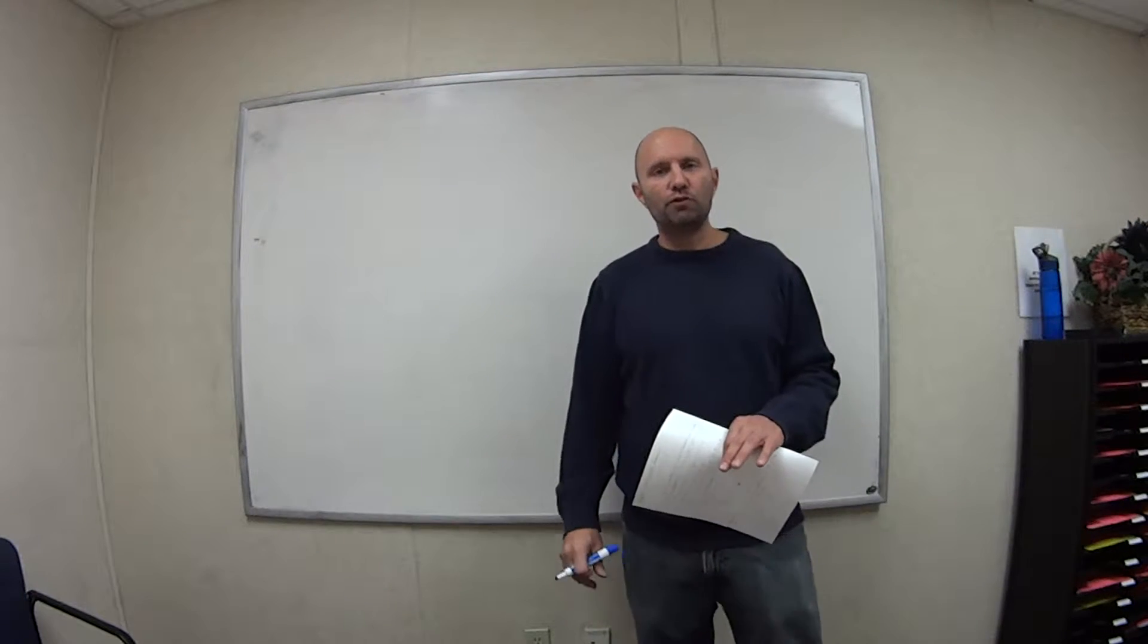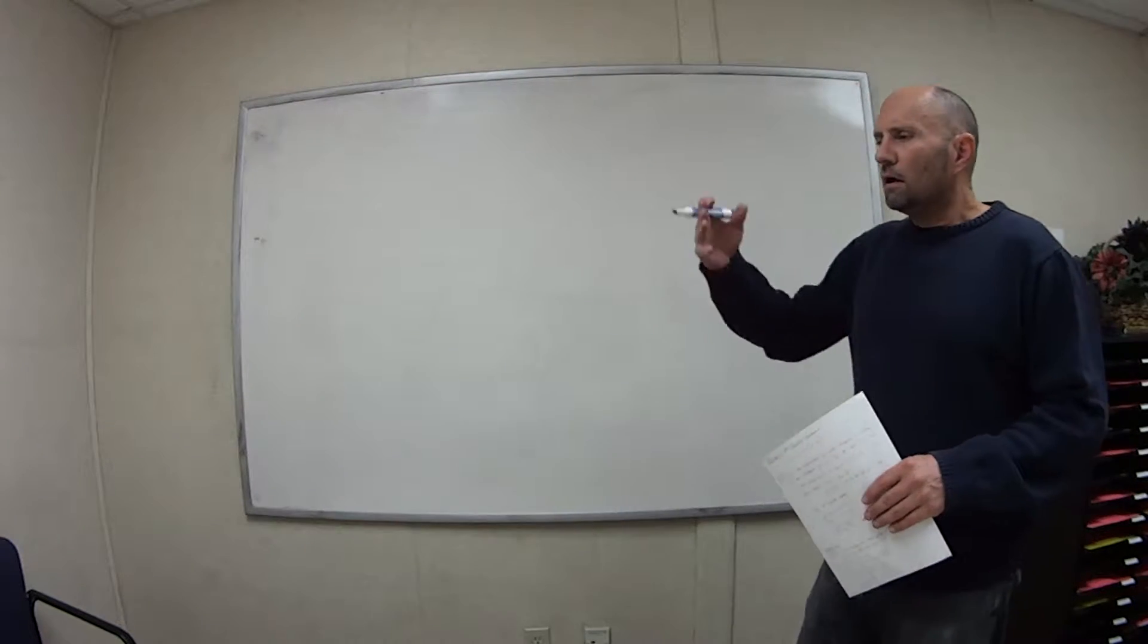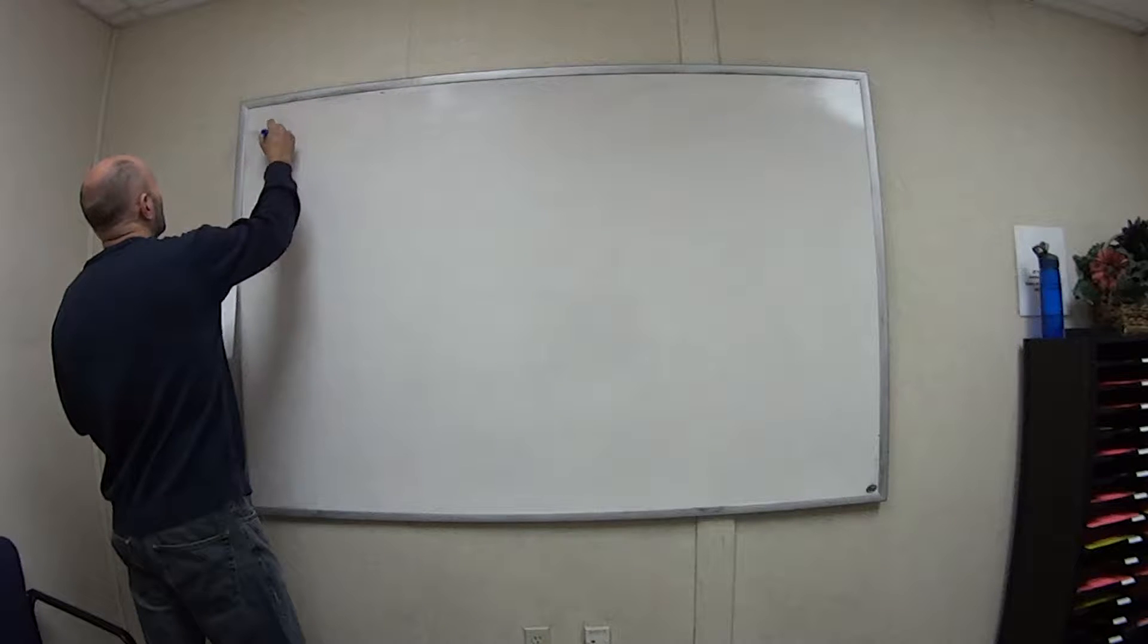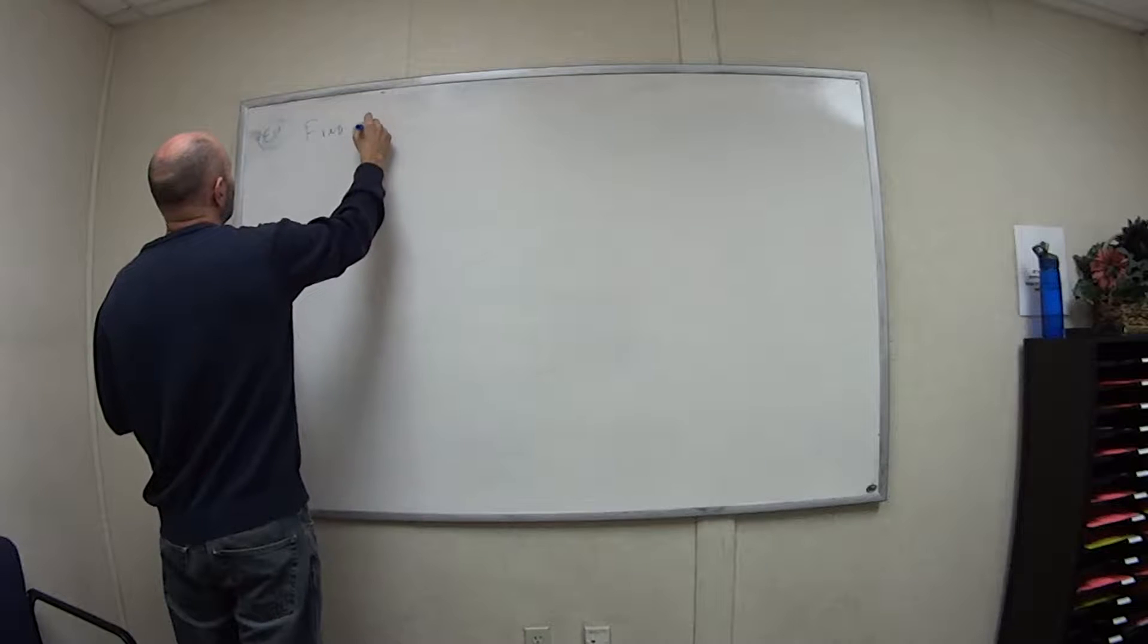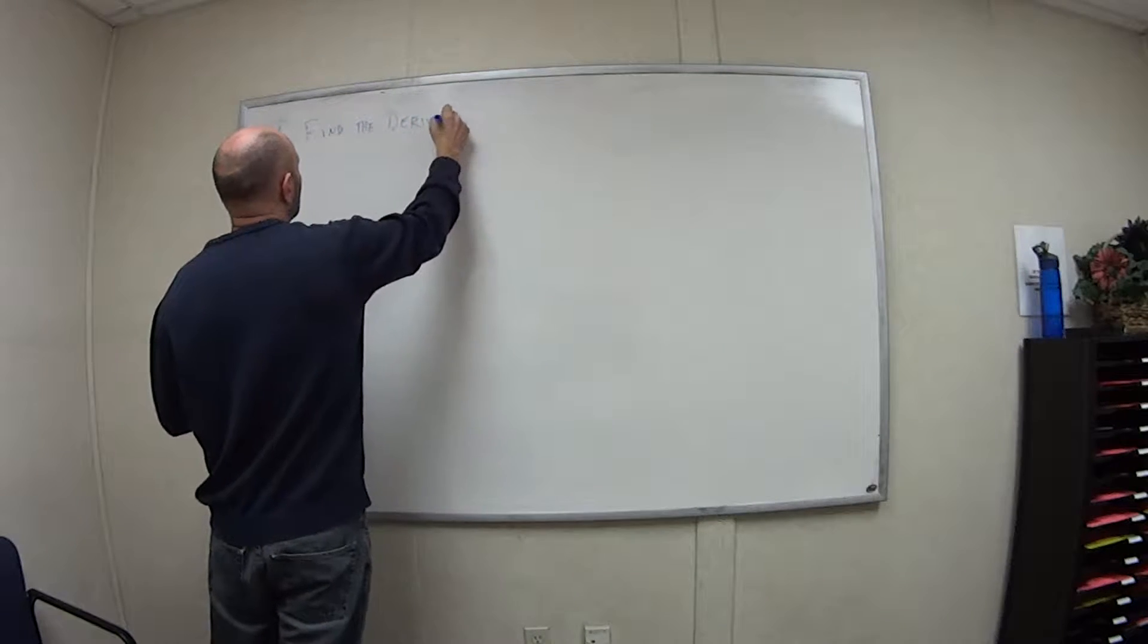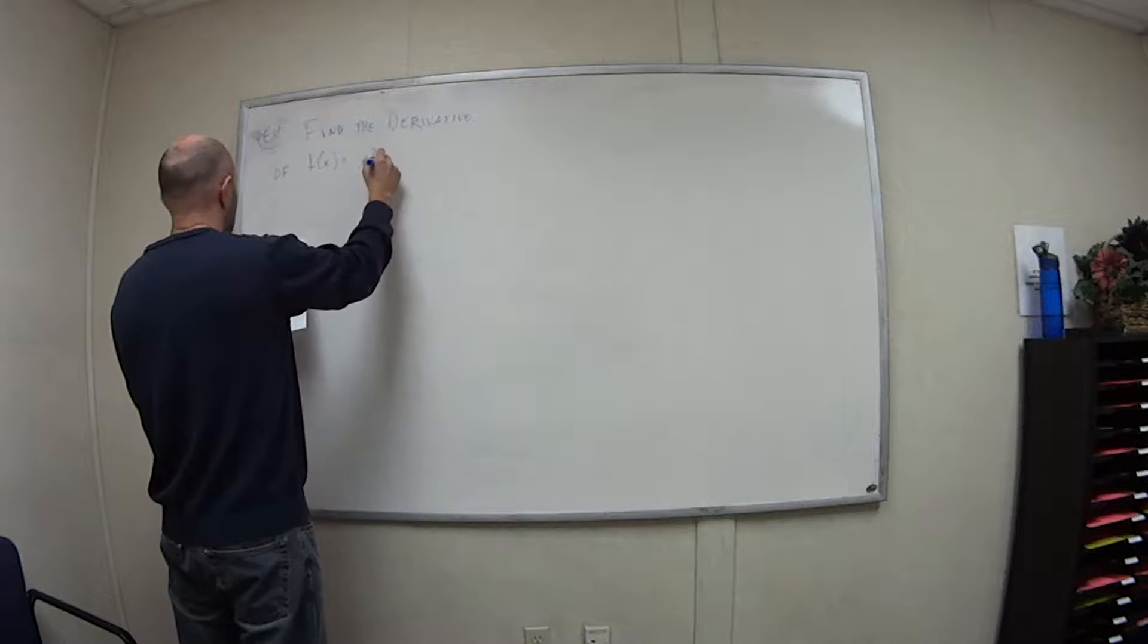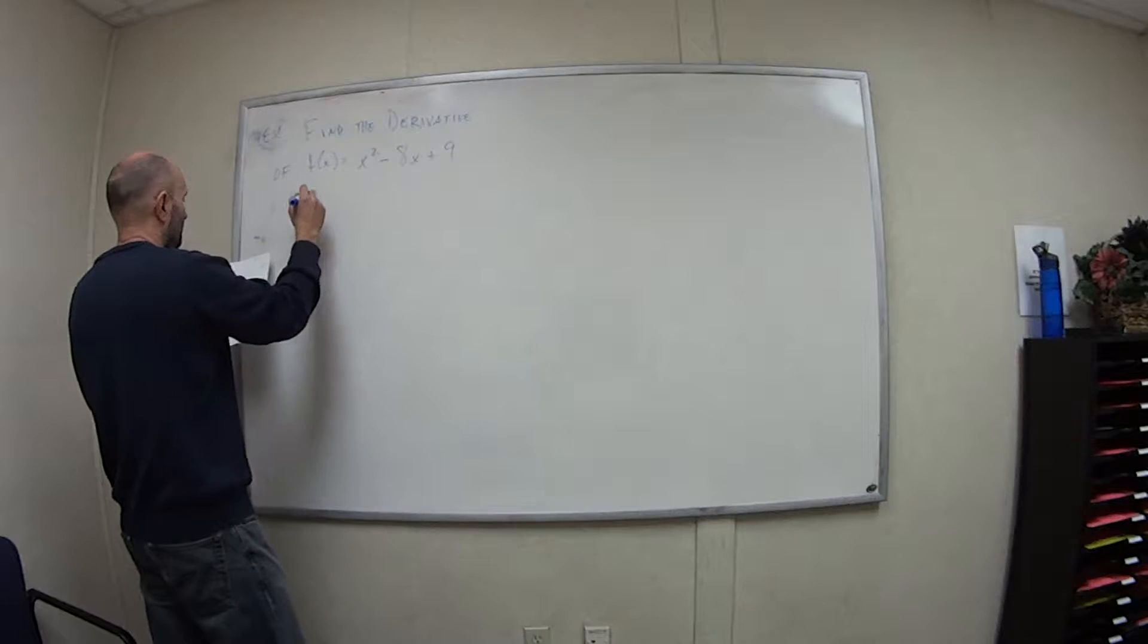Hi and welcome to video two of three videos for section 2.1. We're going to work some examples now using that derivative formula that we learned in video one. Let's say we want to find the derivative of the function f of x equals x squared minus 8x plus 9 at a number a.